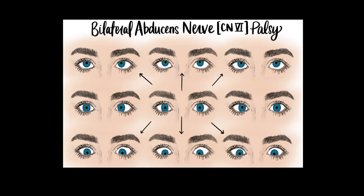A bilateral sixth nerve palsy is common when there's increased intracranial pressure. You don't see much in primary gaze, but the patient looks to the right and we don't get abduction of the right eye; the patient looks to the left and we don't get abduction of the left eye. Bilateral sixth nerve palsy should always make you think of increased intracranial pressure.